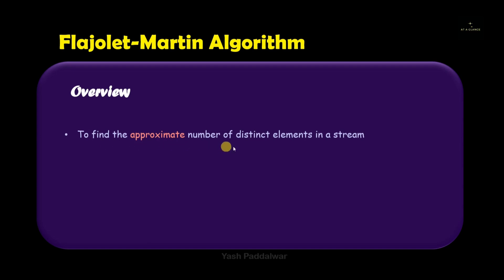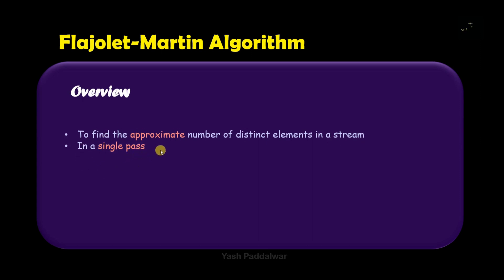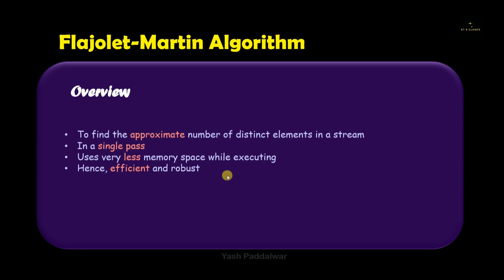So let's have an overview of this particular algorithm. This algorithm is focused to find the approximate number of distinct elements in a stream. Note this word 'approximate' — it is not going to give you the exact count. But as you know, it's very difficult to find the exact answer of any query fired on streaming data, and hence the approximate count also matters a lot. And this approximate count will be calculated with very less space, in a single pass — meaning one single traversal is more than enough. In the naive solution we were using a unique set array storing all unique elements; here we do not require anything like that, and because of which it uses very less memory.